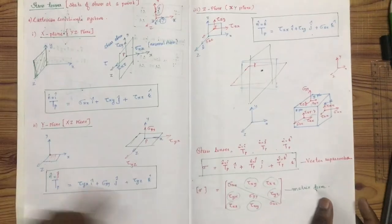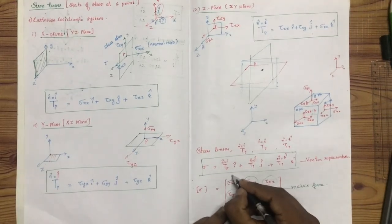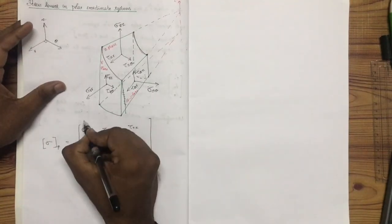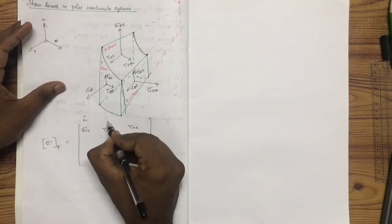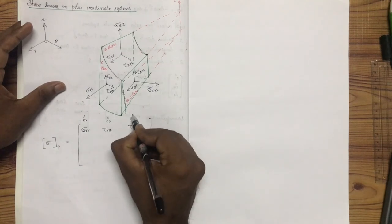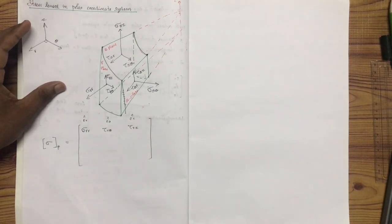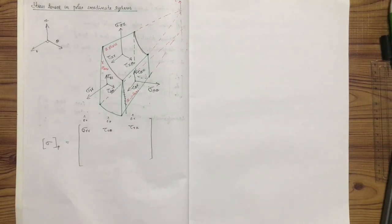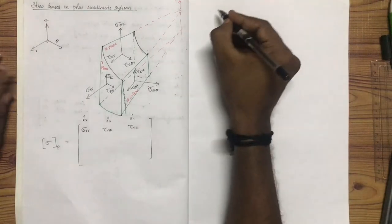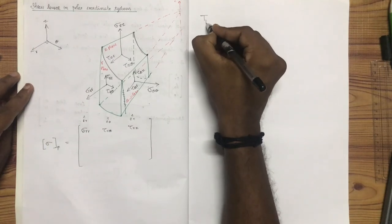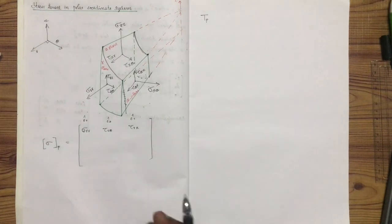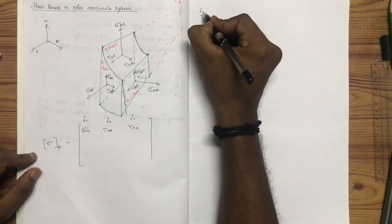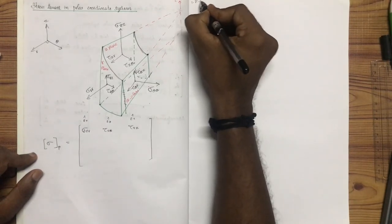This is x-direction, y-direction, z-direction. This is e-cap r, e-cap theta, e-cap z. We have a tensor. First of all, tp — I will go to the tensor. Tp, n-cap is equal to, first of all, r-plane.